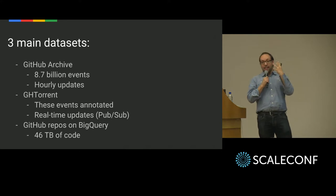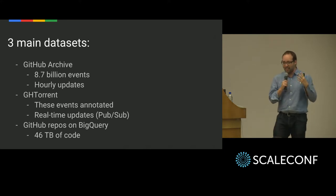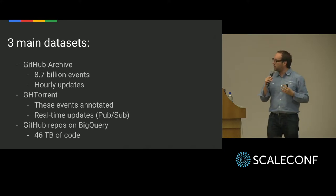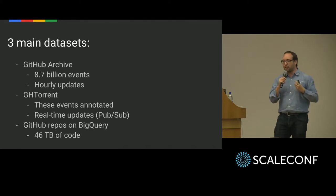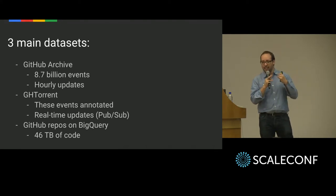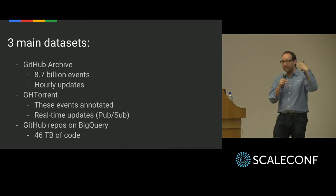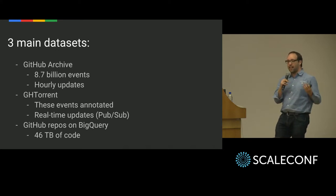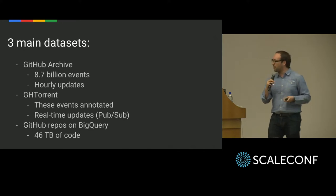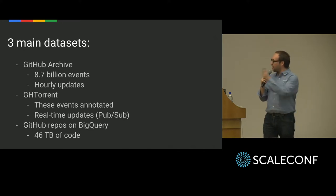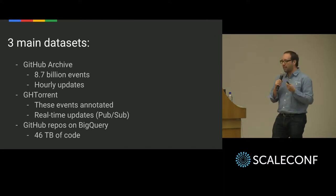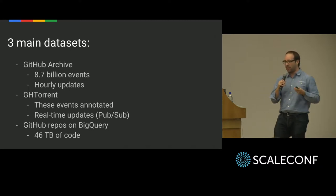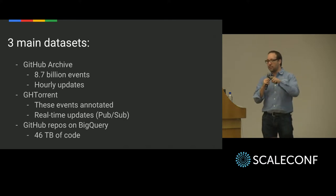We're going to look at three main datasets. The three I'm going to focus on today: GitHub Archive — an archive of all events happening in GitHub, minute by minute, hour by hour; GH Torrent — which goes further into the graph and brings us more information from GitHub; and also the GitHub repositories on BigQuery, where we have a copy of all the open source code we can find on GitHub.